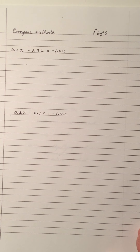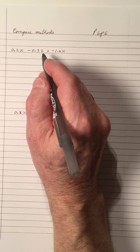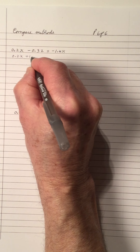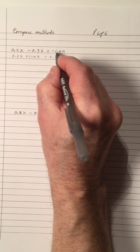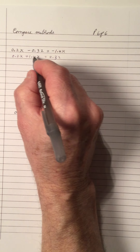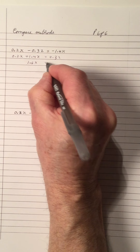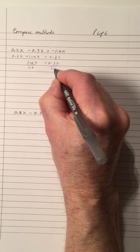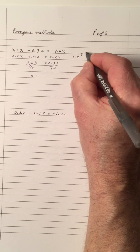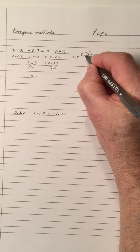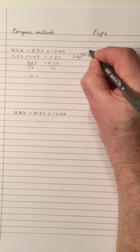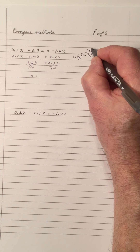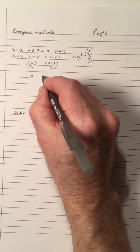What I want to do now is compare the two methods. Let's work this out per normal without multiplying to eliminate the decimal. That becomes a positive, and that becomes a positive. When you add these, you get 1.6x. Divide by 1.6 — that's x. And 1.6 divided into 0.32: the decimal is in both. Move it one place in the divisor, one place in the dividend, move it up. 16 into 3 can't go; 16 into 32 is 2. So the answer is 0.2.